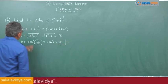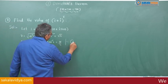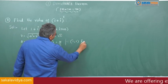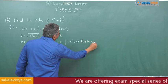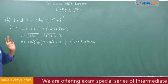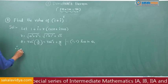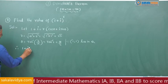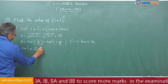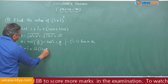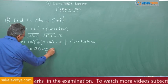Since 1 + i corresponds to the ordered pair (1, 1), it lies in the first quadrant, where θ = tan⁻¹(b/a). Therefore, 1 + i = √2 (cos π/4 + i sin π/4).